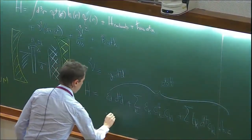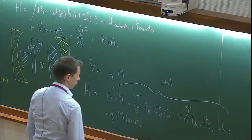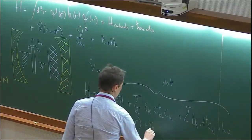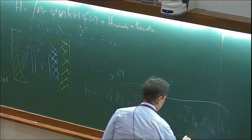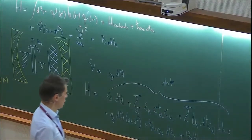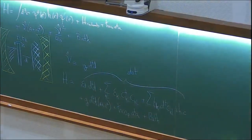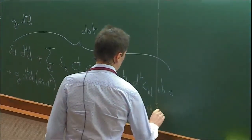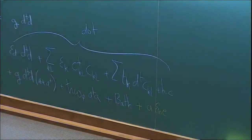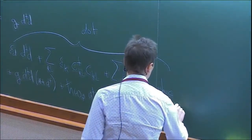Plus we have g·(d†d)(a + a†) + ℏω₀(a†a). And I have to keep in mind that I will drive the system — the usual way of adding a drive is an additional driving term at the drive frequency ω_rf.